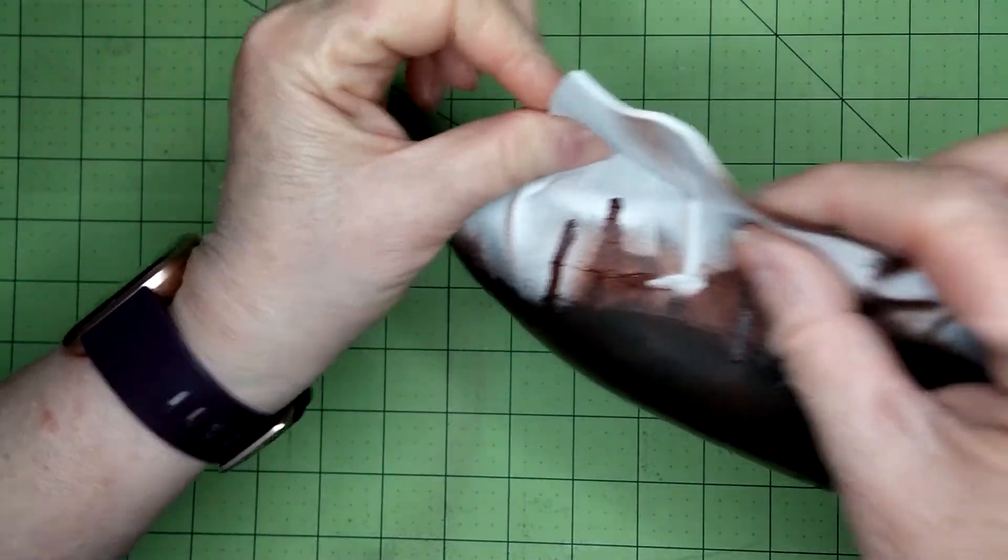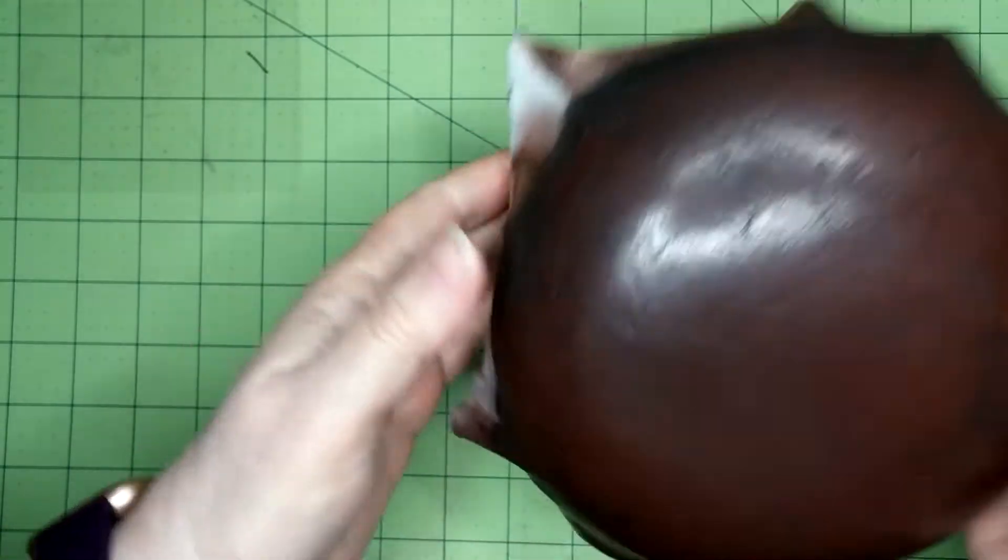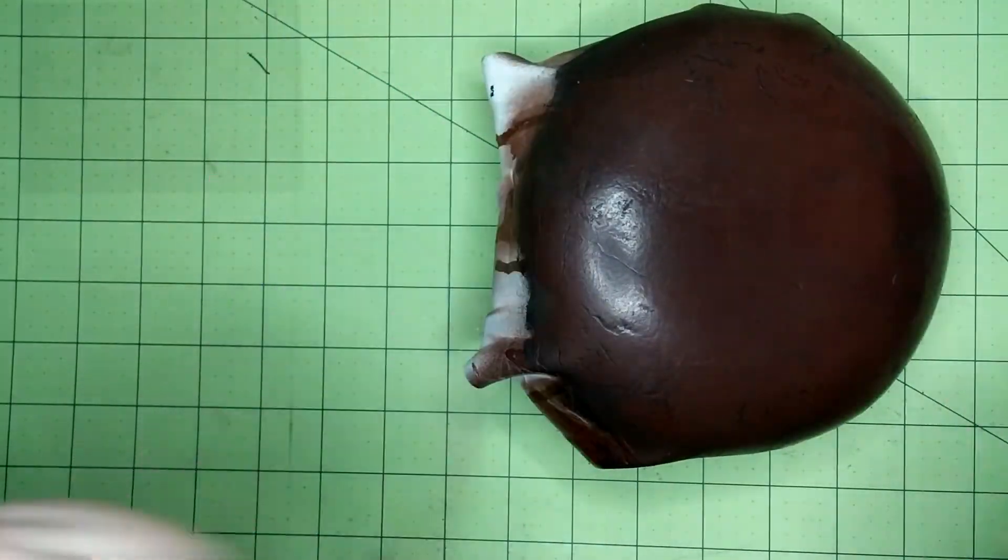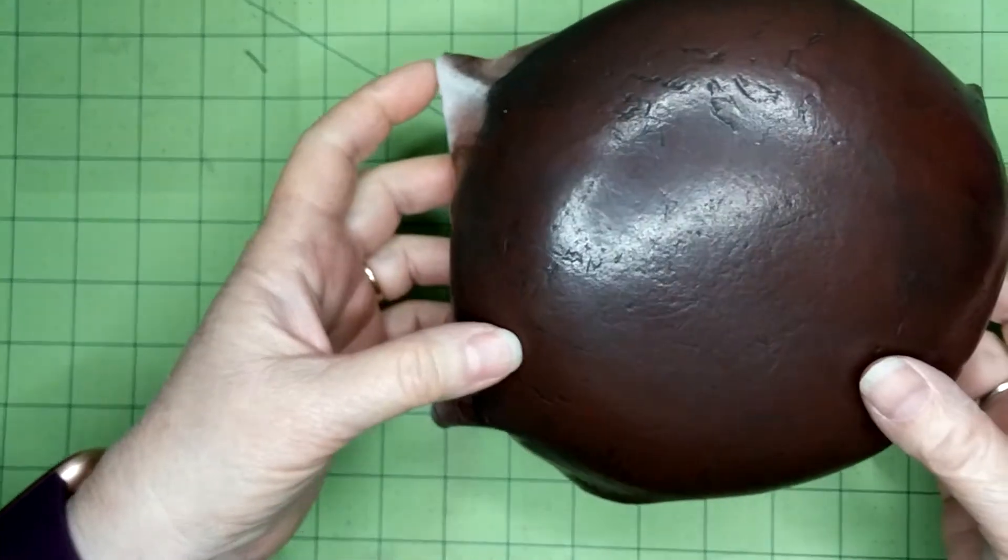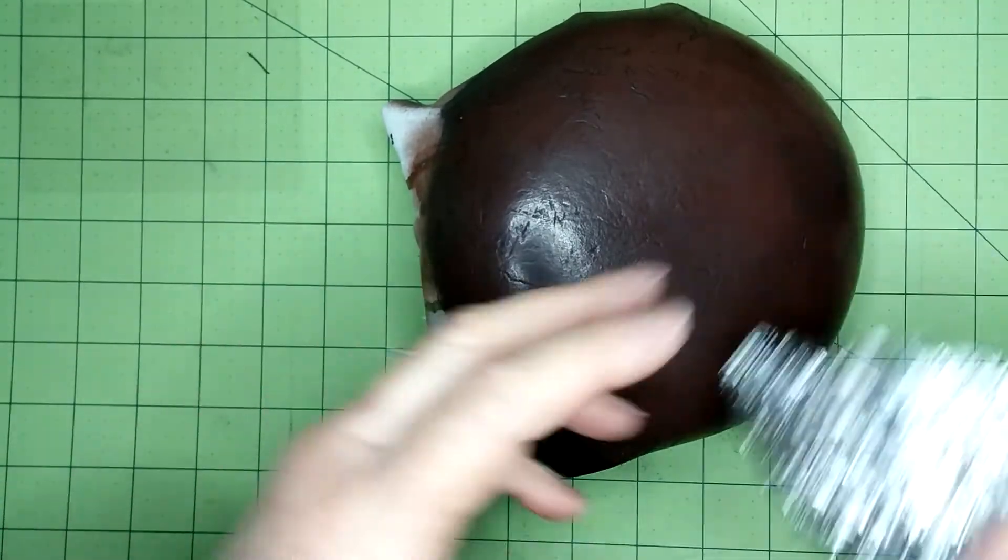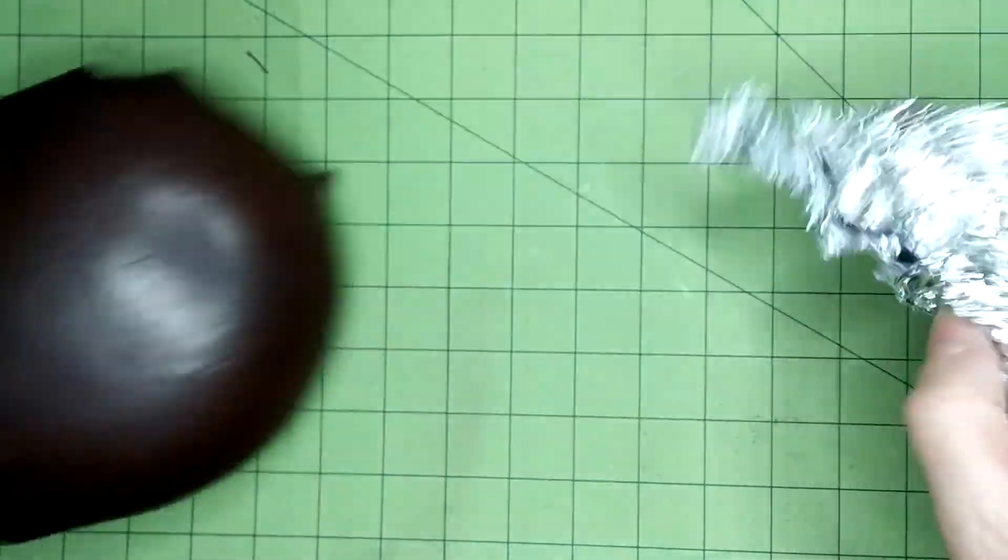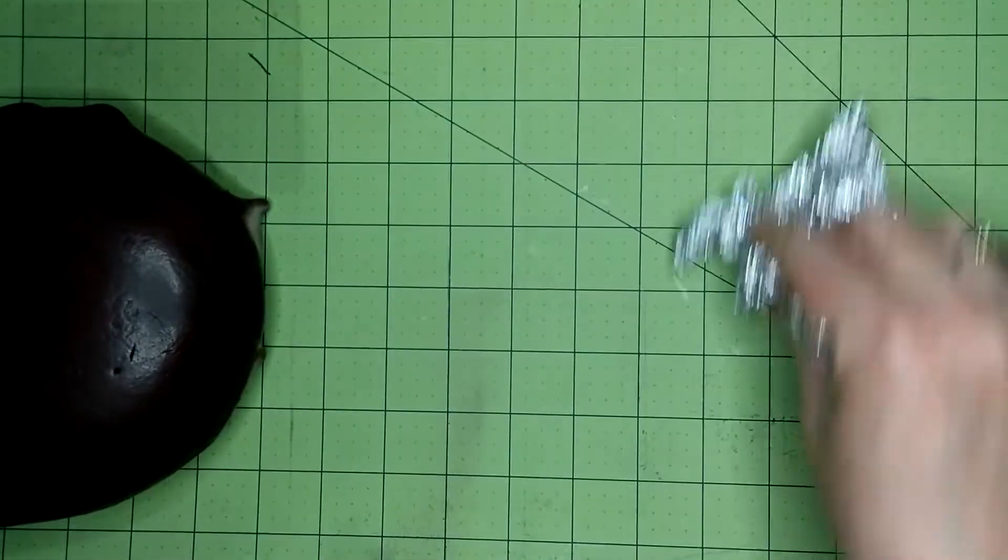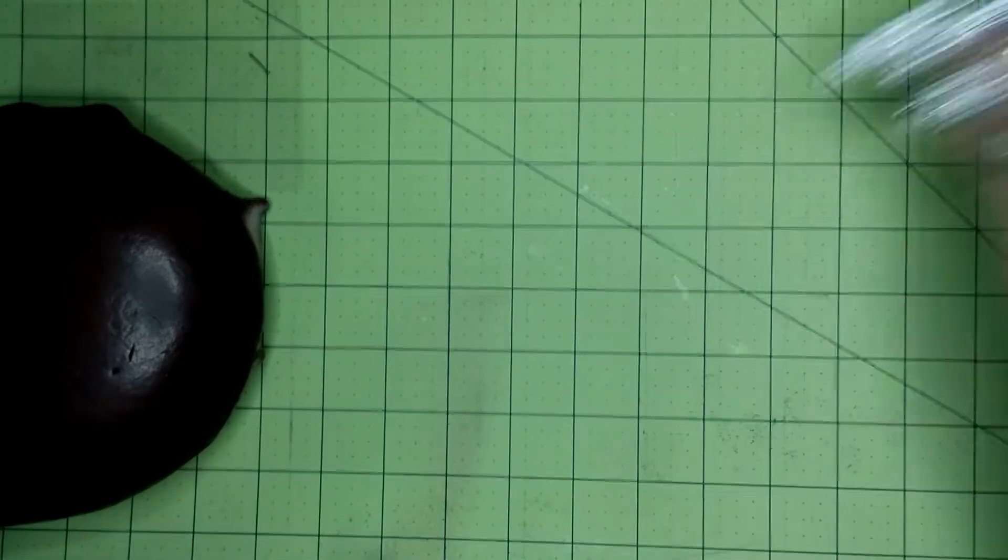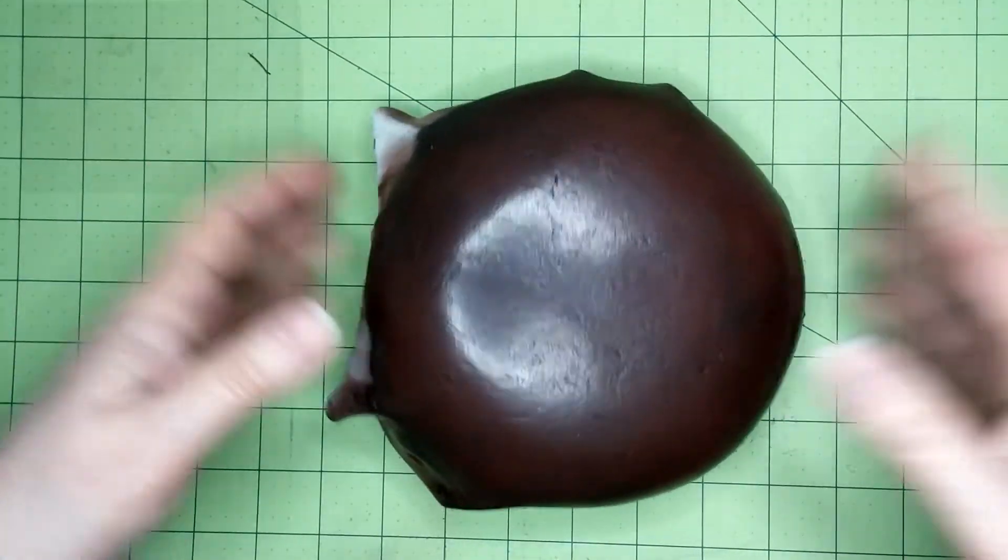This part is 2 millimeter EVA foam that I bought from Michael's. I used my heat gun to conform it to the bottom of the bowl, and then once it was dry I heated it up again and used some foil to press down and make a nice texture. Reheat, lather, rinse, repeat - it took a long time.